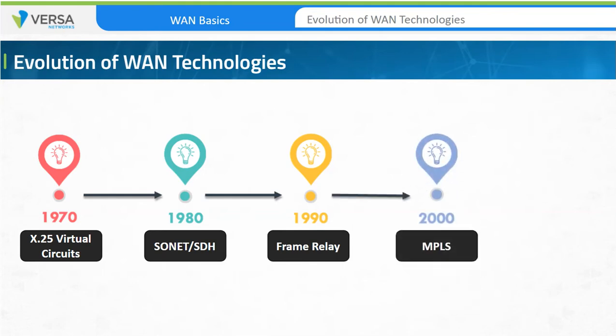In late 1990, MPLS technology was introduced, which was primarily designed to address challenges of slow packet forwarding. It functions by placing a tag on each packet, and devices in the network forward traffic based on the tag, or MPLS label, instead of an IP route lookup. When routers and switches became faster, the need for tag switching for speed was replaced by its ability to hide the IP payload within a tagged tunnel, and applications like MPLS-based Layer 3 VPNs, Layer 2 VPNs, and so forth, became very popular.